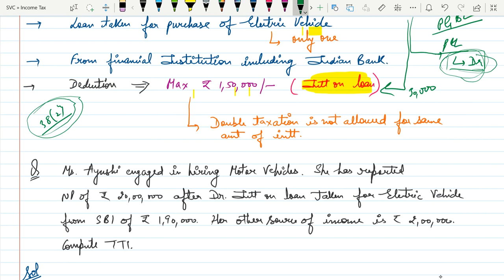Example 1: Ms. IOC is engaged in hiring motor vehicles. She reported a net profit of ₹20 lakh after debiting interest on loan taken for an electric vehicle from SBI of ₹1,90,000. Other source of income is ₹2 lakh. We need to compute TTI — total taxable income.